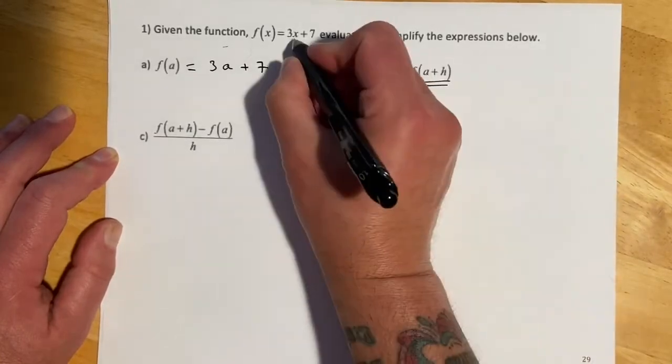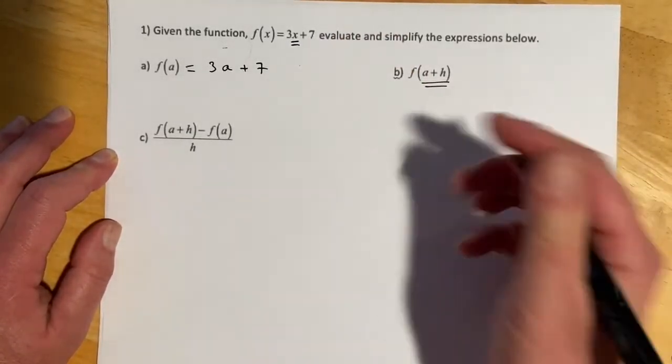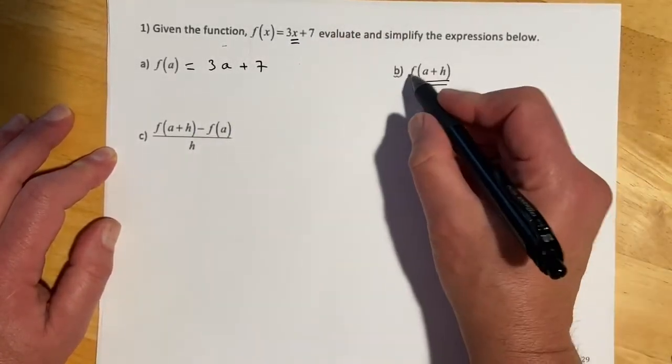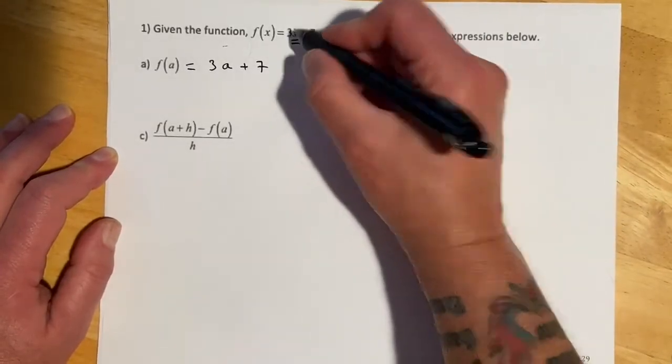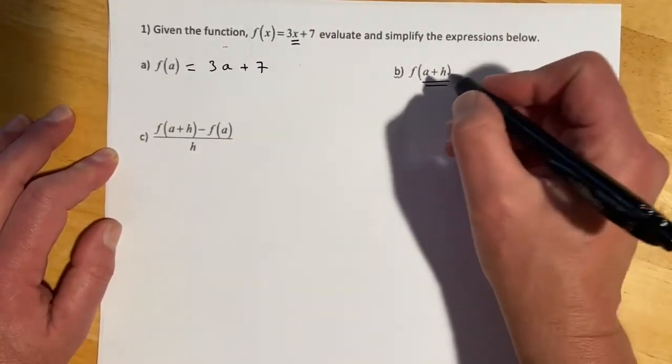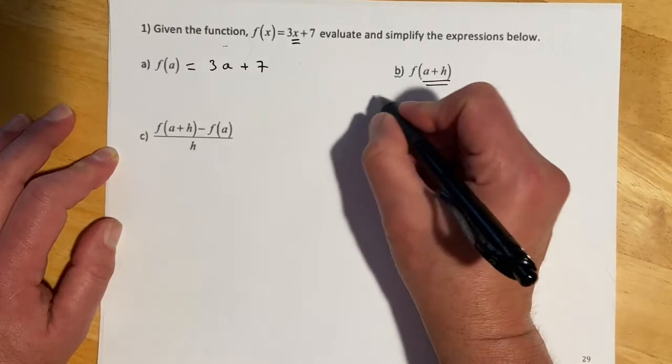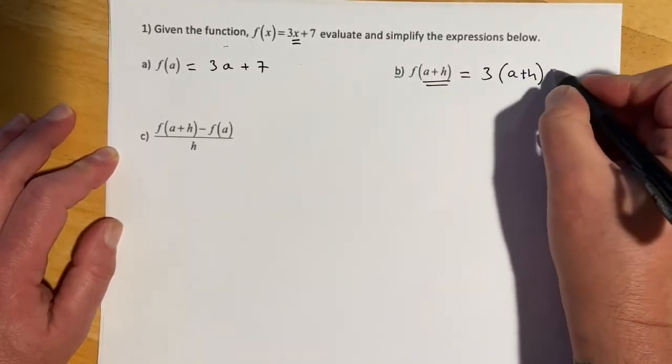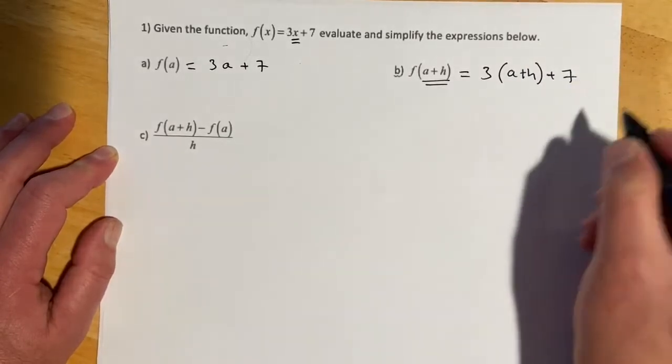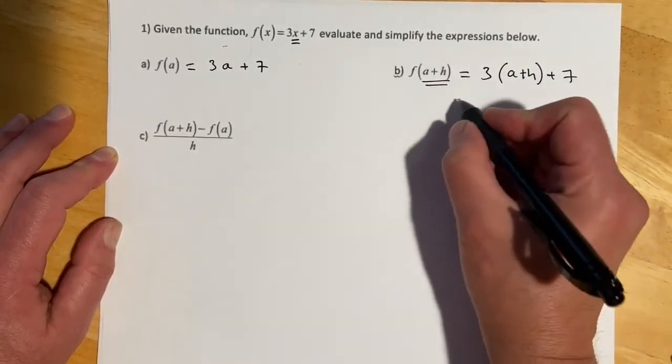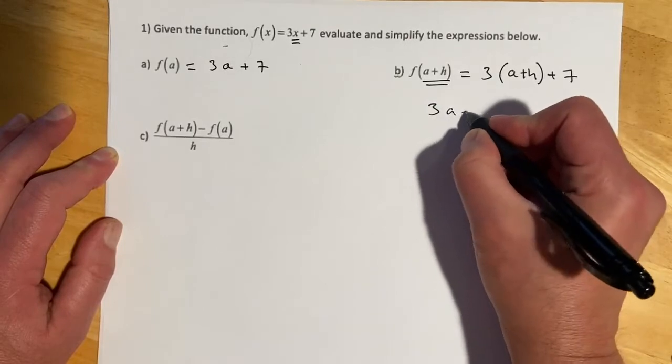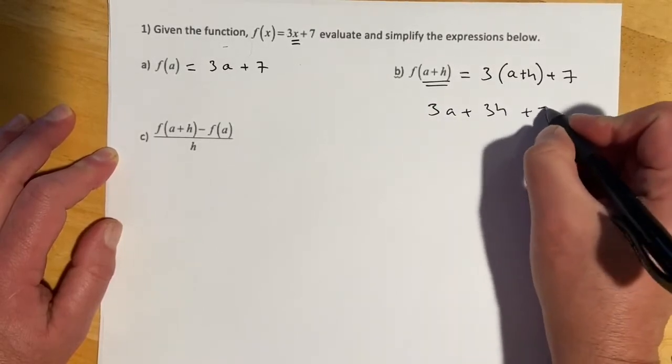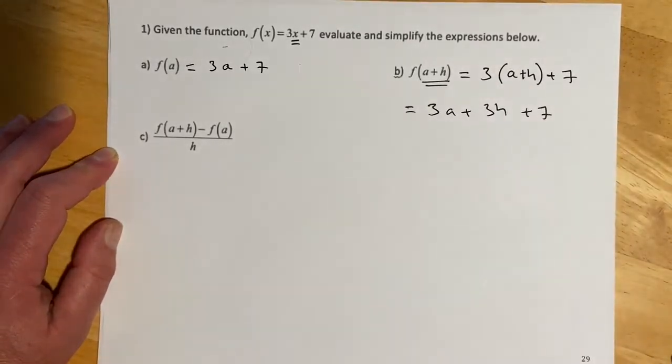If I want to find f of a plus h, all of this right here is going in for that x. Because remember, the same way if we found f of 7, we go 3 times 7, the 7 goes in for the x. Here, a plus h goes in. So this would equal 3, and then need the parentheses, a plus h, and then plus 7. And then we can distribute that 3, and then that's going to come out 3a plus 3h plus 7. So that would be that one.